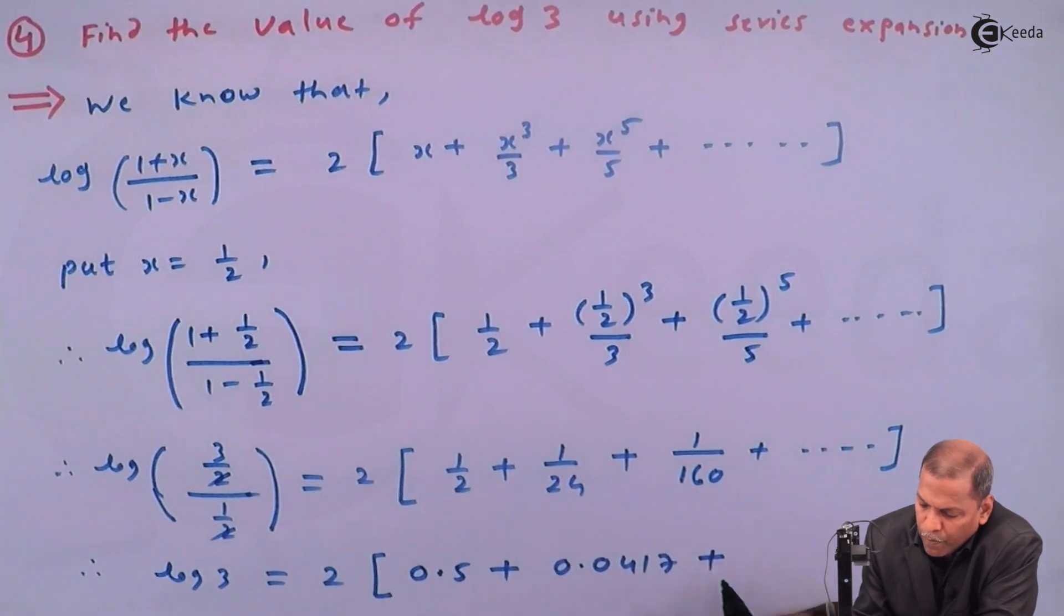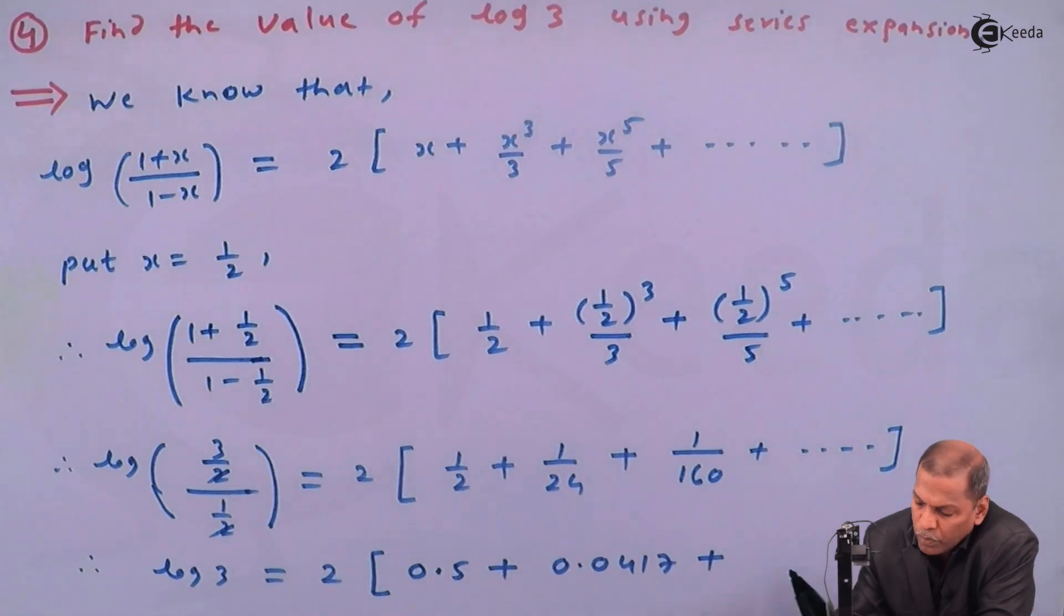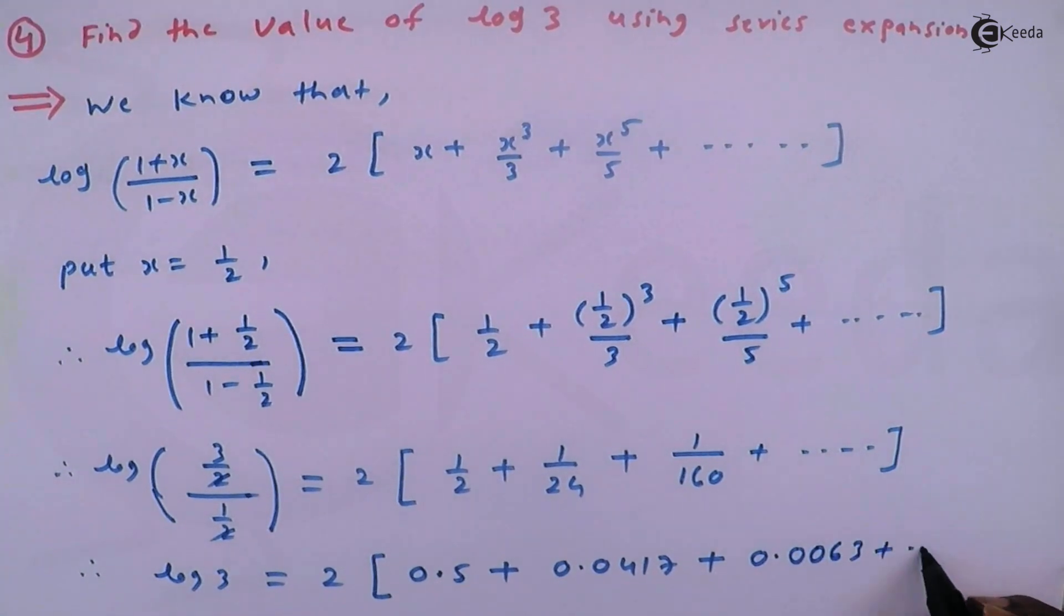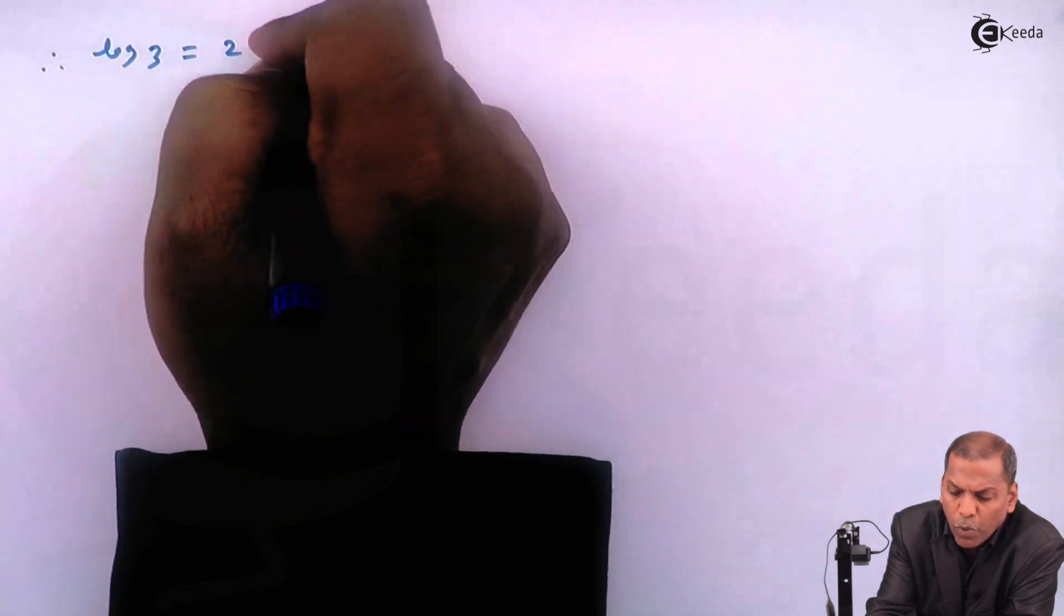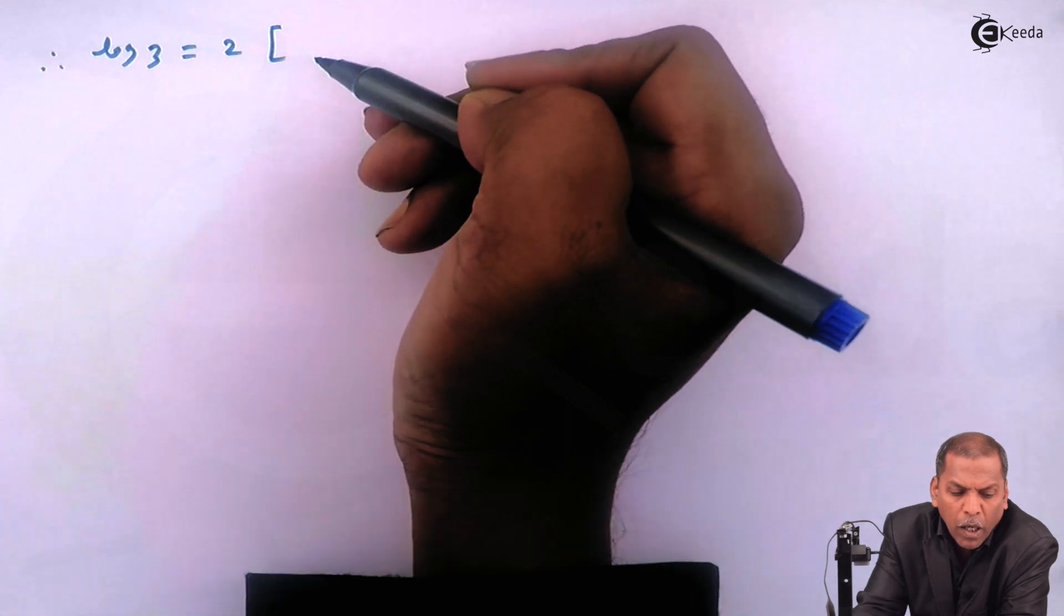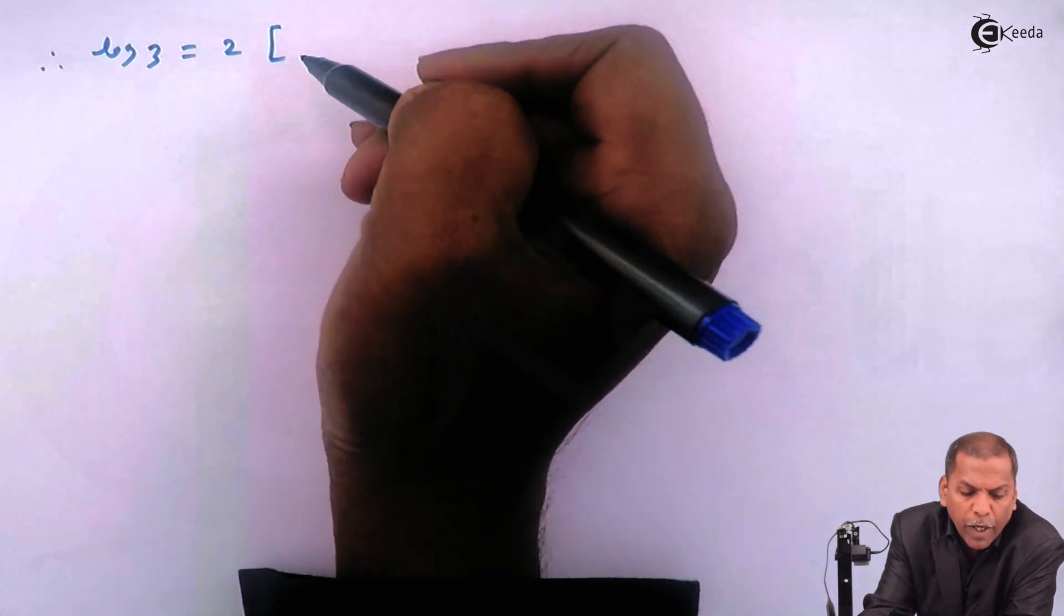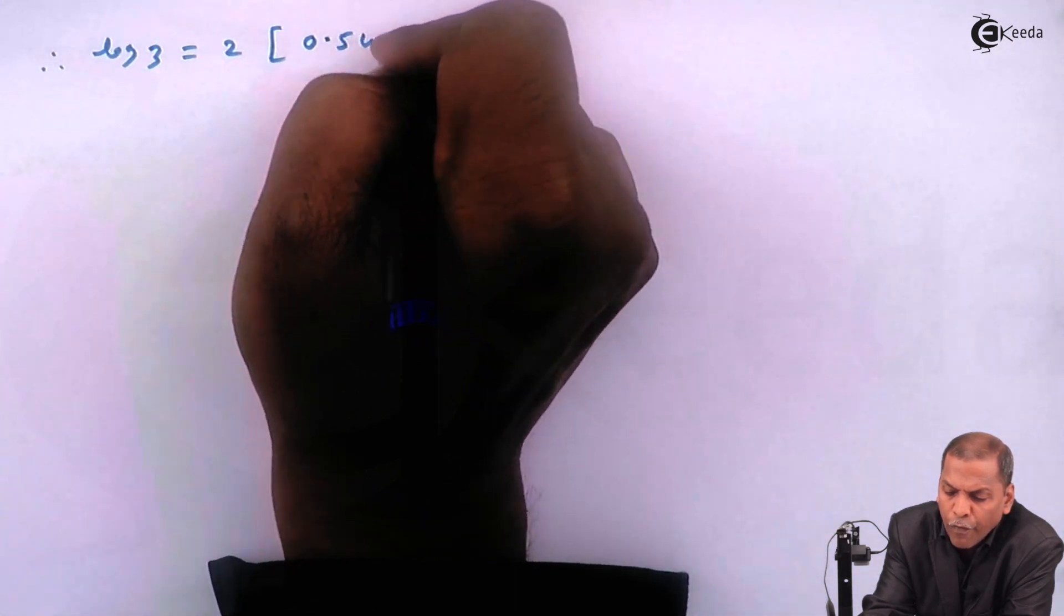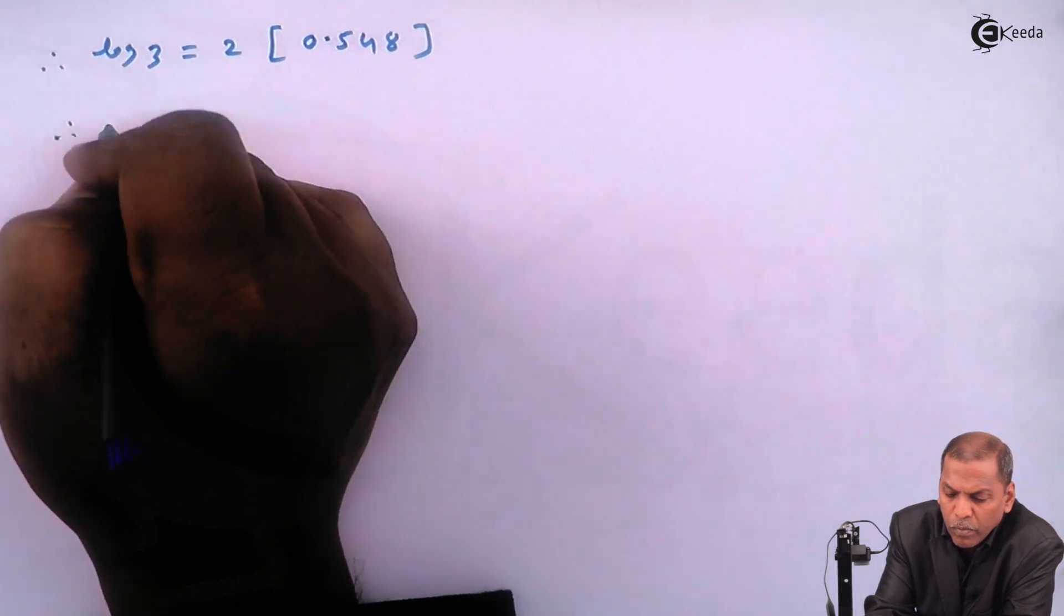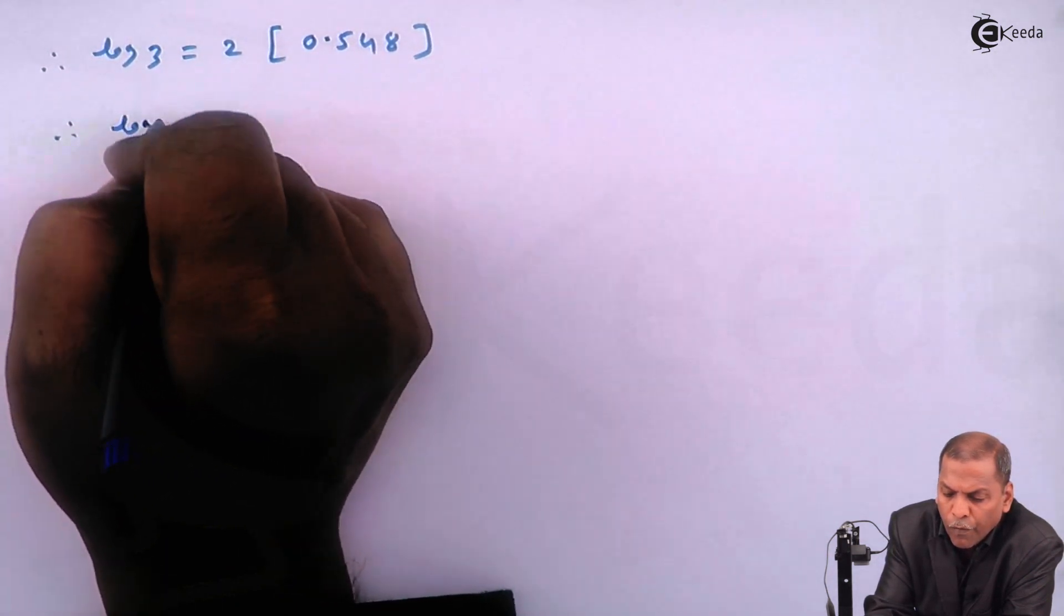Converting to decimals: 1/160 = 0.0063 and so on. Therefore, the next step is log 3 = 2 times the sum of all terms. Adding these terms gives 0.548, so log 3 = 2[0.548].